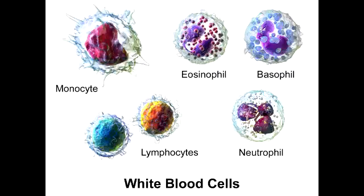What do the small, more numerous granules of neutrophils contain? The small, more numerous granules contain alkaline phosphatase, collagenase, lysozymes, and lactoferrin.